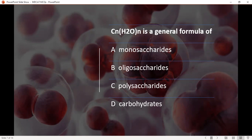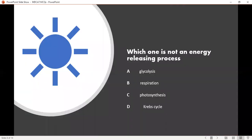Which one is not an energy-releasing process? Option A glycolysis, option B respiration, option C photosynthesis, and option D is Krebs cycle. We know that ATP is released during glycolysis, respiration, and Krebs cycle, but no energy is released in photosynthesis. So, option C is correct answer, that is photosynthesis.